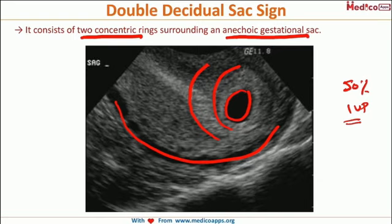Presence of double decidual sac sign is very highly suggestive of intrauterine pregnancy. However, even if it is absent, that does not mean that there is a pseudo-gestational sac. The double decidual sac sign is seen in only around 50% of cases, but once it is present, there is a very high probability of intrauterine pregnancy.